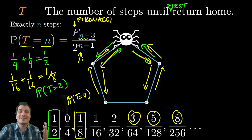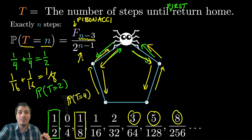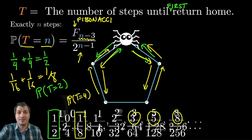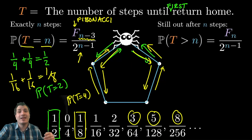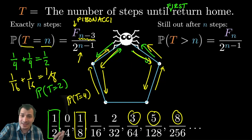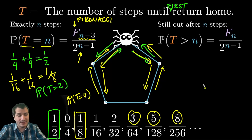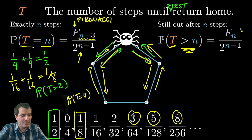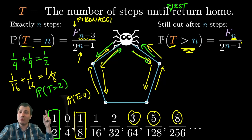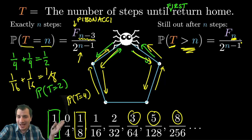One other thing to point out: not only are the individual probabilities Fibonacci numbers, but the cumulative probability distribution is also a Fibonacci number. If you ask what is the probability Mr. Spider is still walking at time n — so his walk is some amount of time greater than n — the answer is also a Fibonacci number, and in this case it's the nth Fibonacci number. So this is what we're trying to show: that Mr. Spider has Fibonacci probabilities to end up back at his house for the first time.